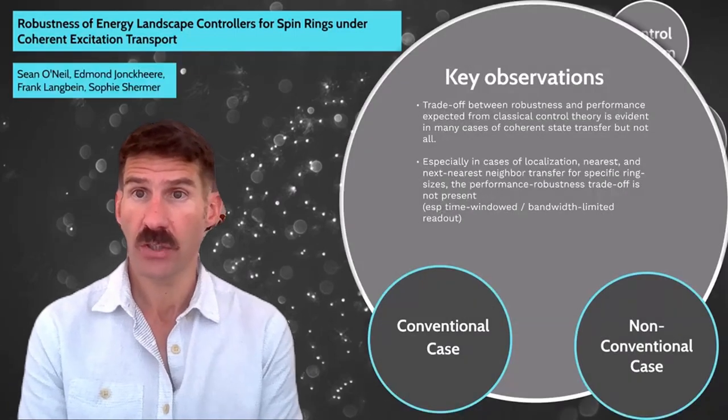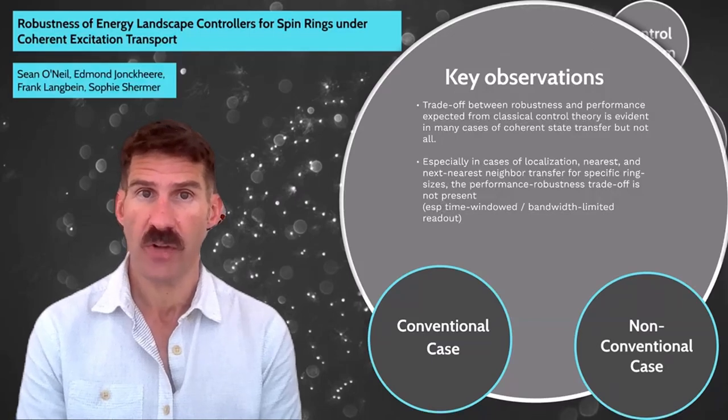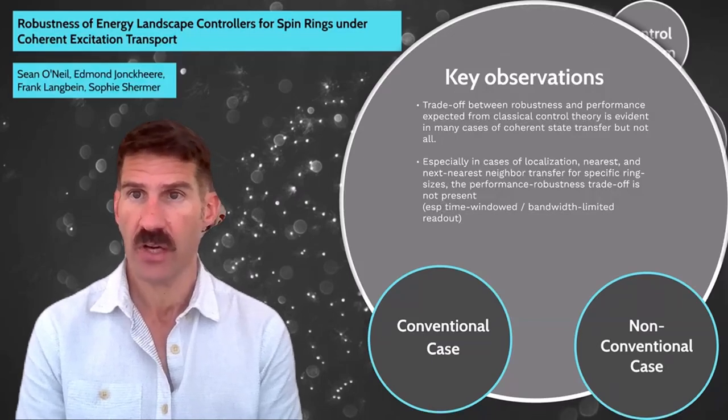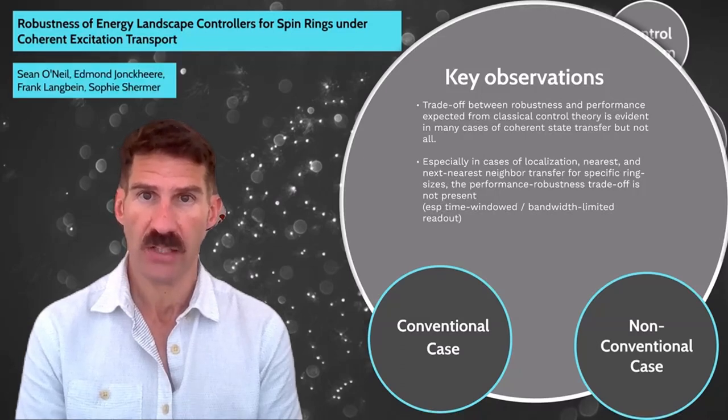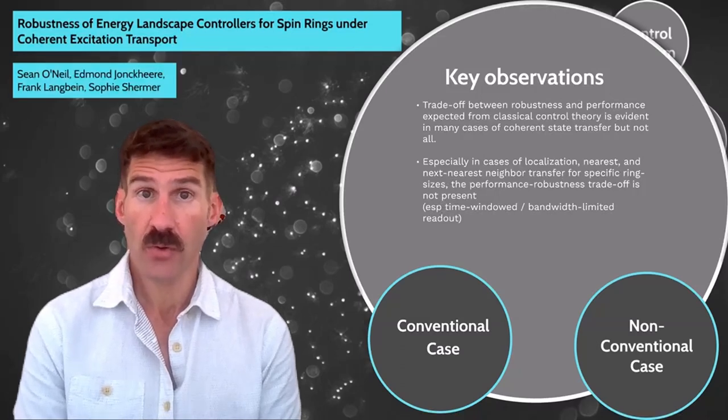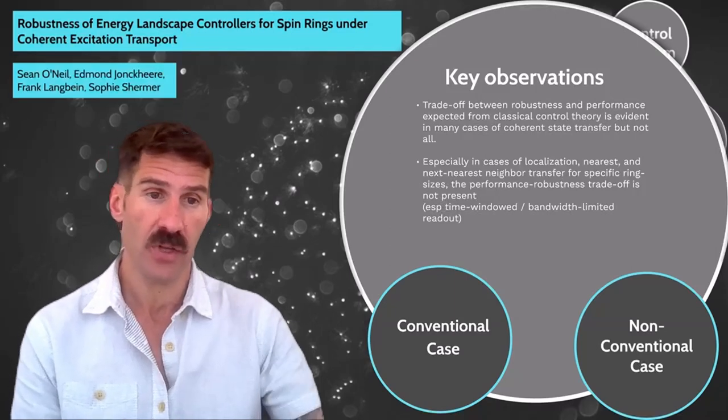Coming back to the original question, we do see that in some cases, coherent state transfer in spin rings provides the conditions to get around that trade-off between performance and robustness that is a fundamental limitation from classical feedback control. Though the reason for this non-conventional trend is still an open question and a topic of ongoing research.